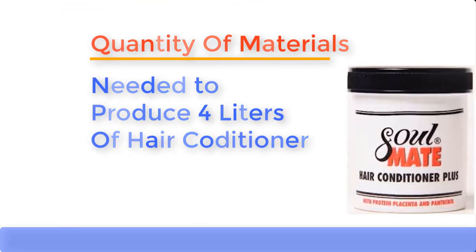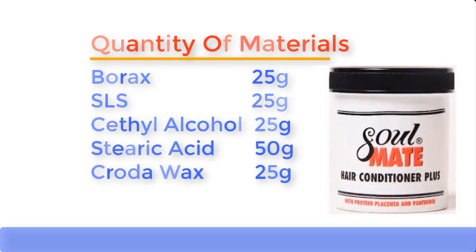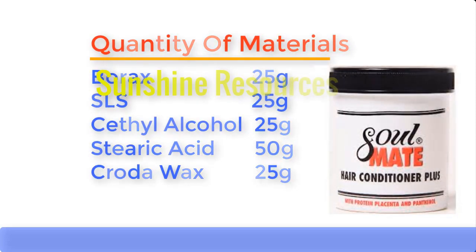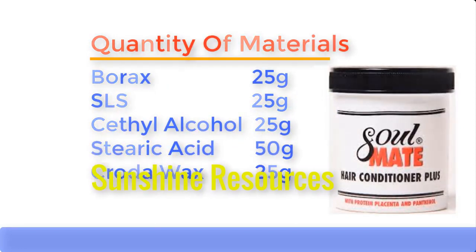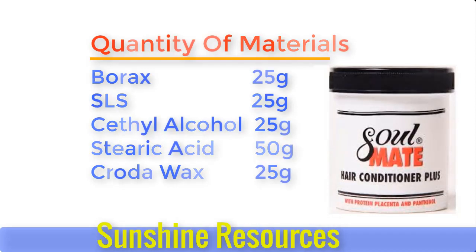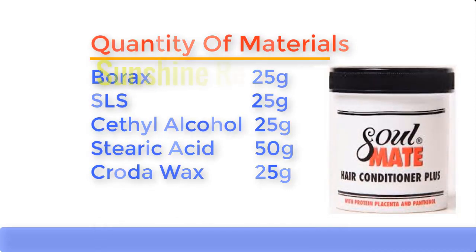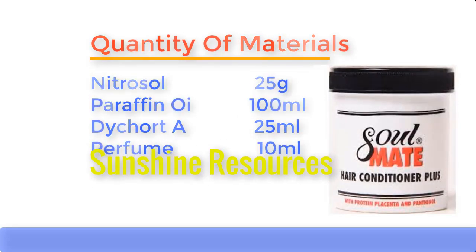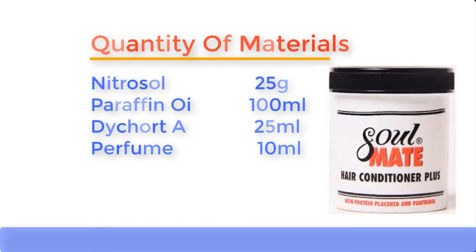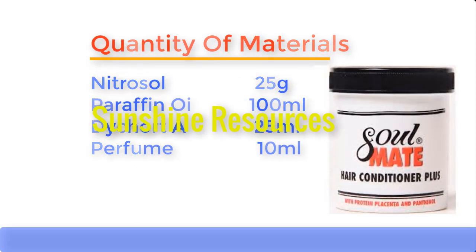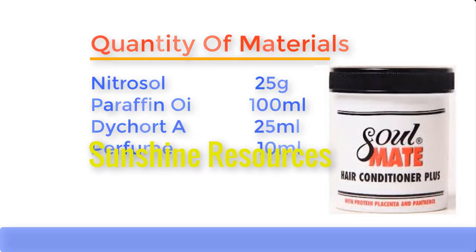Borax: 25 grams. Sodium lauryl sulfate (SLS): 25 grams. Cetyl alcohol: 25 grams. Stearic acid: 50 grams. Cruder wax: 25 grams. Nitrosol: 25 grams. Paraffin oil: 100 ml. Dicot A: 25 ml. And perfume: 10 ml.